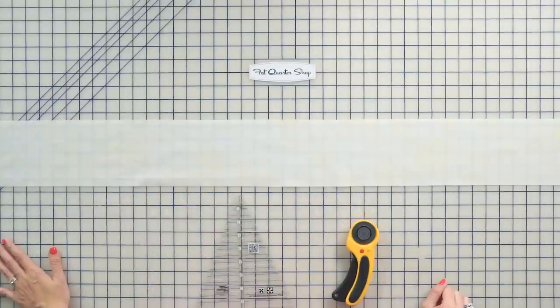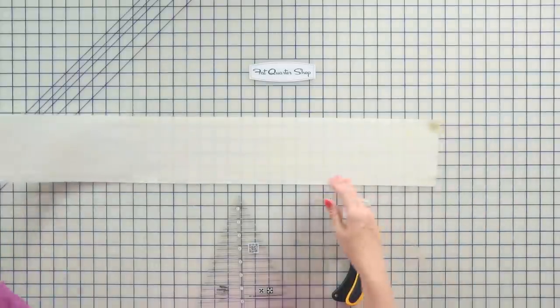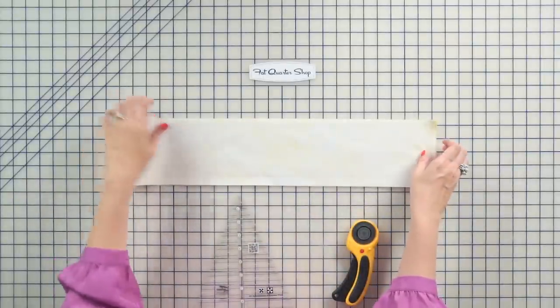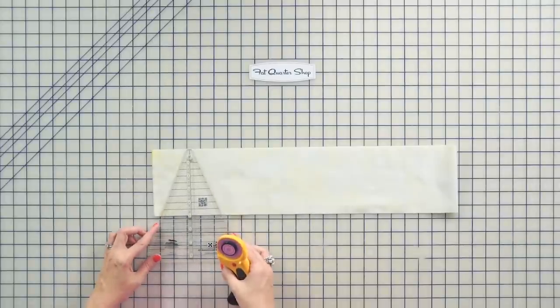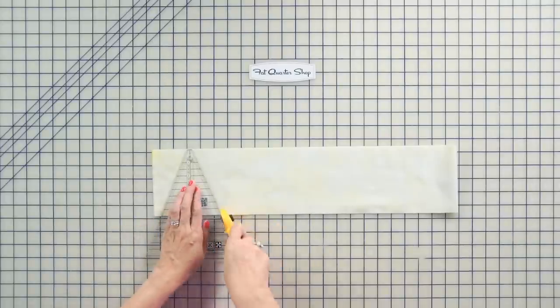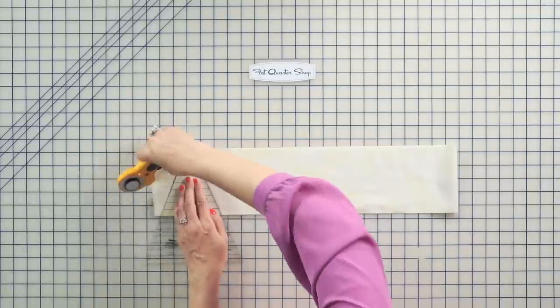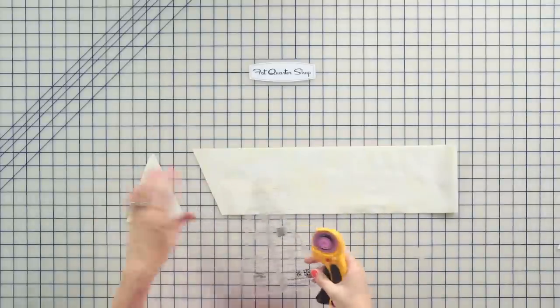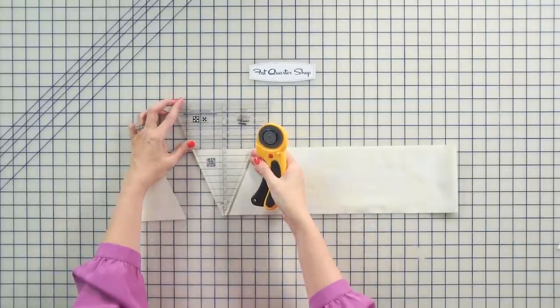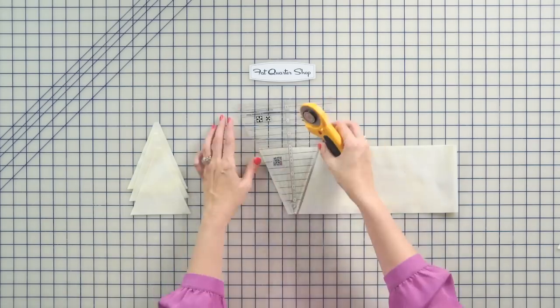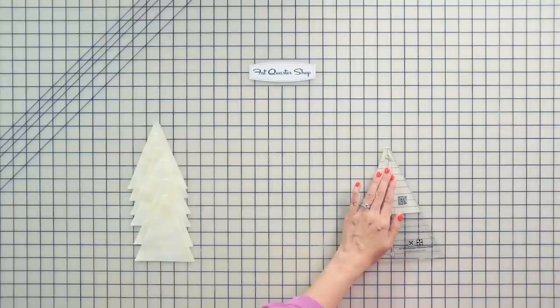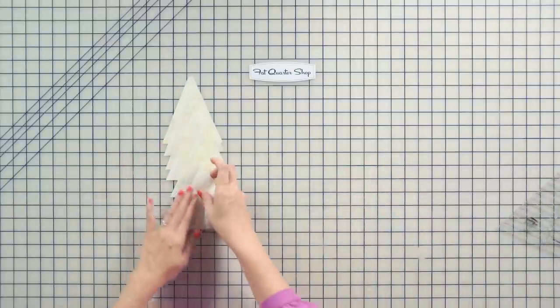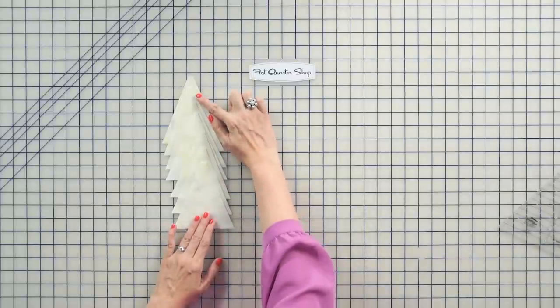Now we're gonna cut our background triangles. From each of your background strips that you've already cut, we're gonna place them in half and we're gonna do that same technique. We're gonna discard this. Now on this one, we're gonna keep all of our triangles. So from each of your strip, you're gonna get 14 background triangles, and you're gonna make a total of 224.